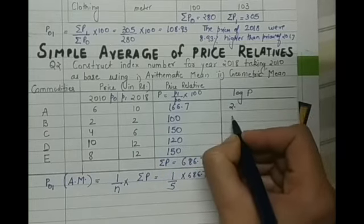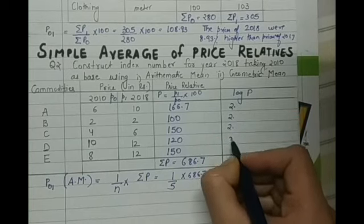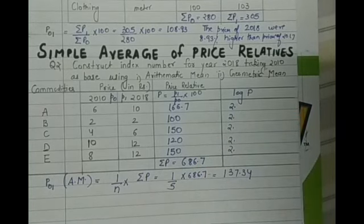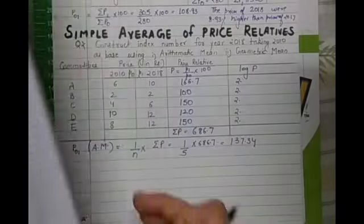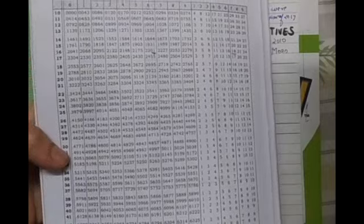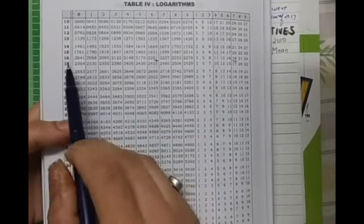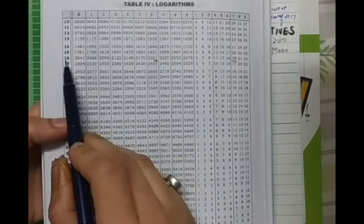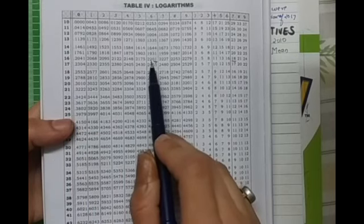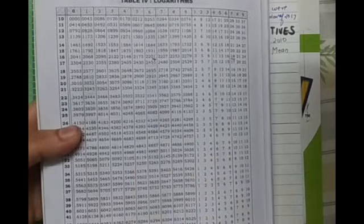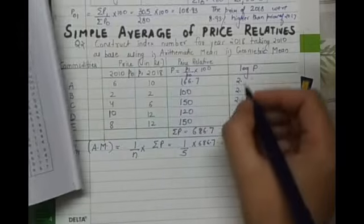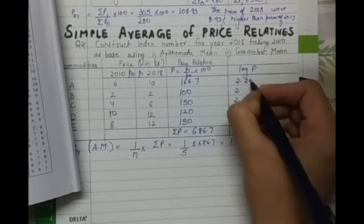So for 166.7, we will look into the log table. This is log table, here this is 16, 16, 6. It is 2201. So the log value will be 2.2201.